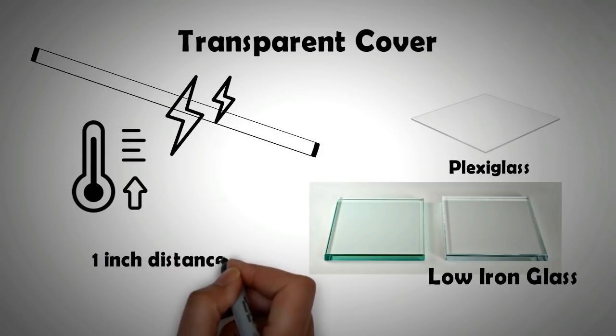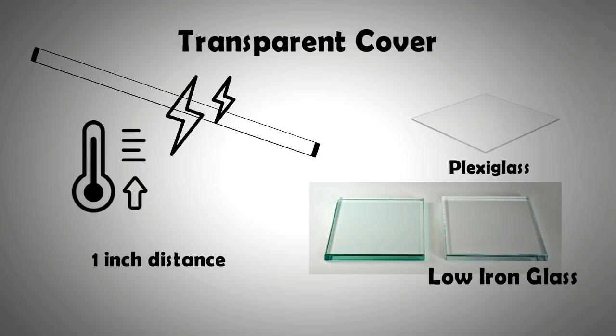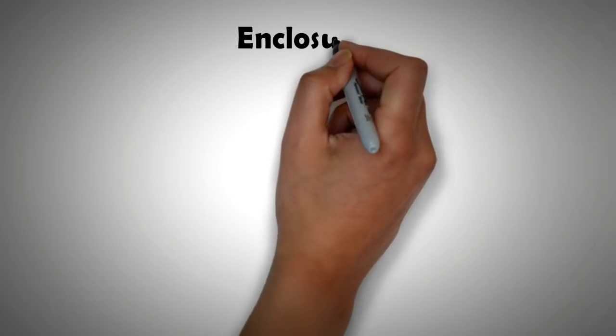It has been reported that the distance between the absorber plate and the transparent cover should be around one inch or 25 millimeters for best results.